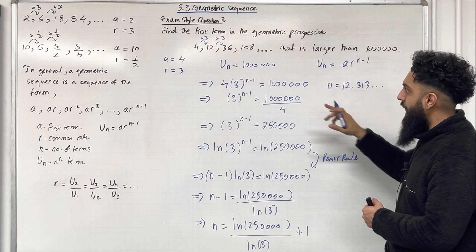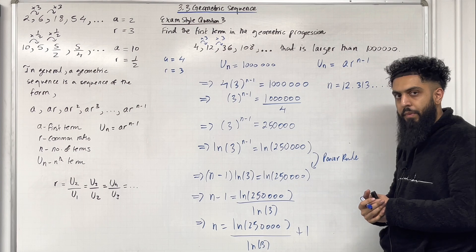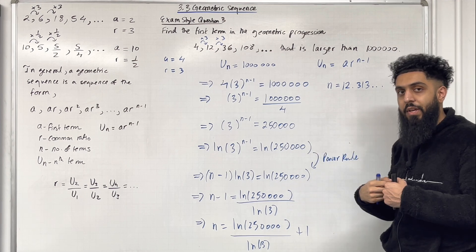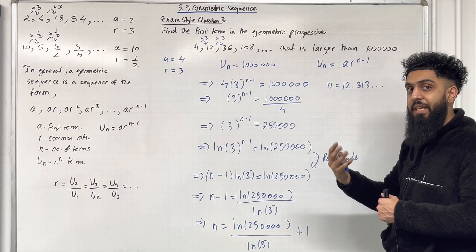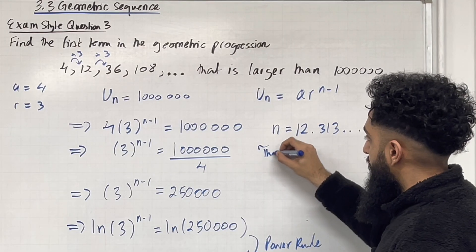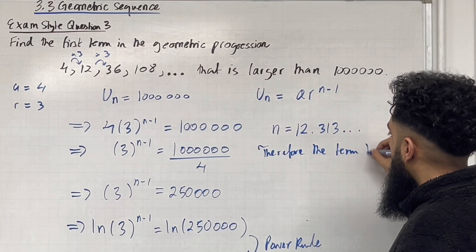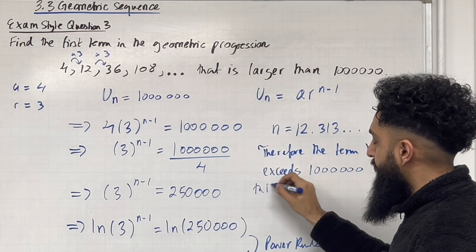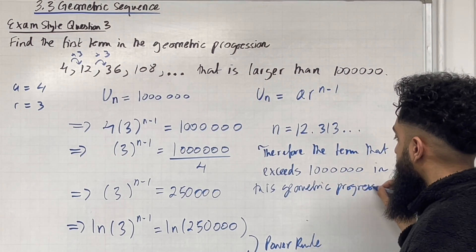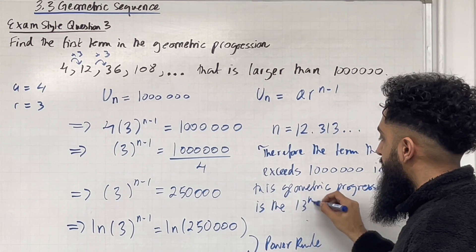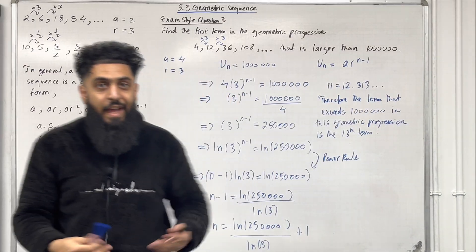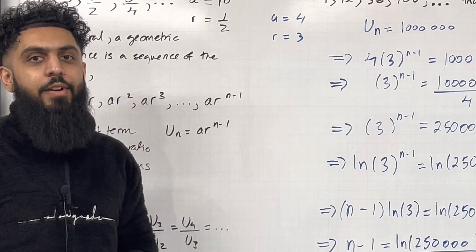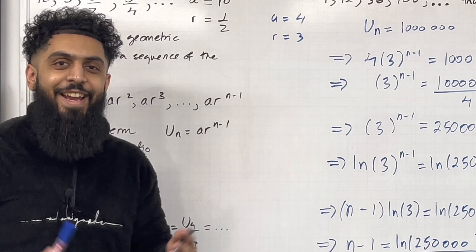Since N ≈ 12.313, we can't have a decimal number of terms. The 12th term would be slightly below 1 million, so the first term that exceeds 1 million is the 13th term. That completes exam style question 3 and this teaching video on 3.3 geometric sequences. If you found the video useful, please subscribe, leave a like, leave a comment, and turn on your notification bell.